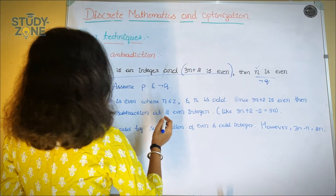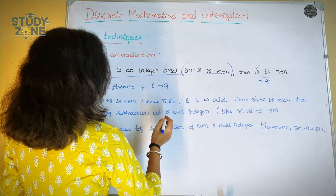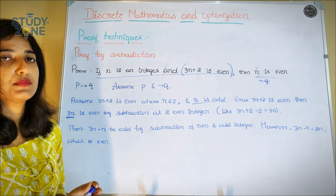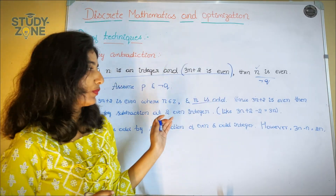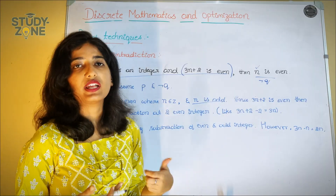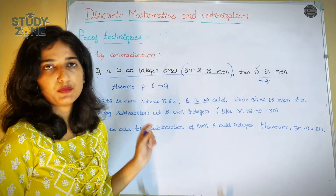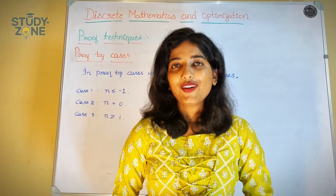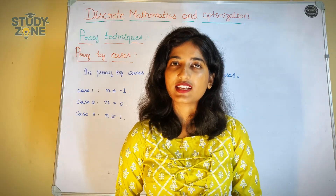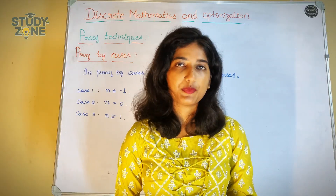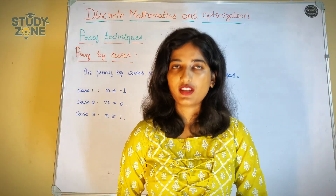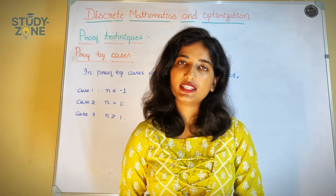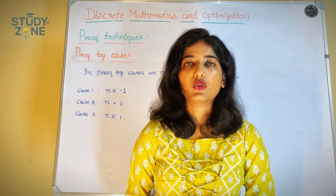Here we assumed n is odd, but by our proof we have n as even. Hence the proof. I hope you understand the example of proof by contradiction. So let's move on to the next proof, that is proof by cases.